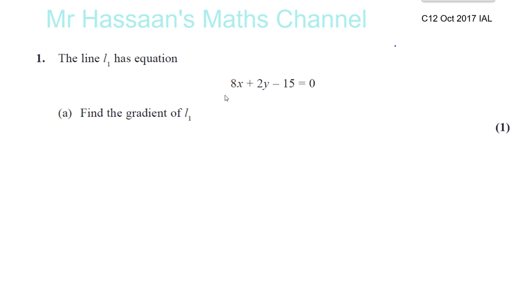The line L1 has equation 8x plus 2y minus 15 equals 0. Find the gradient of line 1. Well, that's pretty simple. We have to basically rearrange it so it's in the form y equals mx plus c. If we make y the subject, then the coefficient of x will be the gradient. m is the gradient.